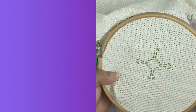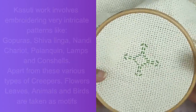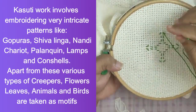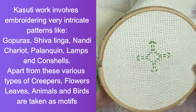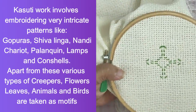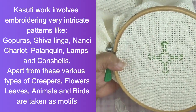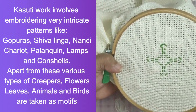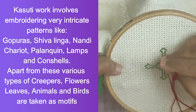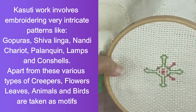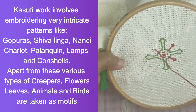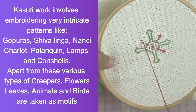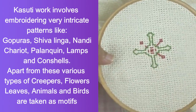Kasuti work involves embroidering very intricate patterns like gopuras, Shivalinga, Nandi, chariot, palanquin, lambs, corn, and shells. Apart from this, various types of creepers, flowers, leaves, animals, and birds are also taken as motifs.